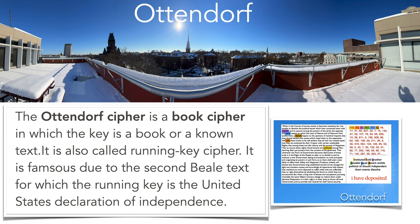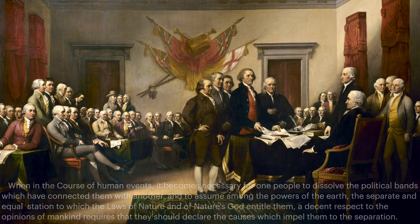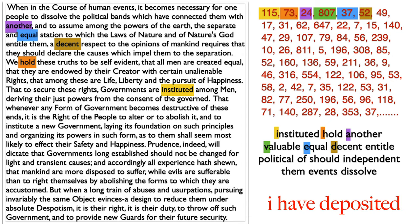The Ottendorf cipher uses a book or text to encode the message. For the Beale treasure riddle, the middle text has been cracked — the running key was the United States Declaration of Independence. Numbers like 115, 73, 24 tell which word to pick from that text. For example, 115 is the 115th word, 'instituted,' giving the letter I; the 73rd word is 'hold,' giving H, and so on. The second Beale text starts with 'I have deposited' and describes a treasure, but the first and third texts have not yet been cracked.